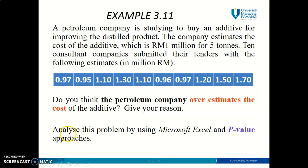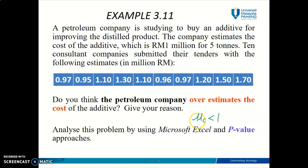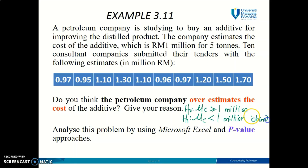The instruction is to analyze the problem using Microsoft Excel and the p-value approach. First, you have to construct your hypothesis statement. The claim here is that the average prices offered by the consultant companies should be less than 1 million. So mu C should be less than 1 million. This is our claim, and by looking at this expression, this claim belongs to H1. So we're done with step number one.